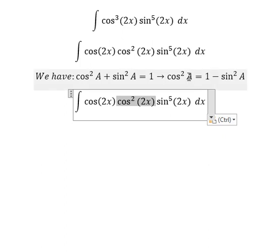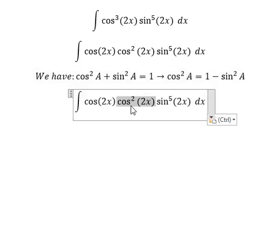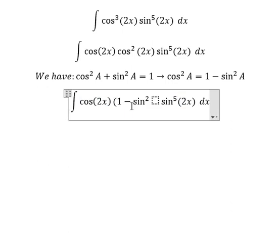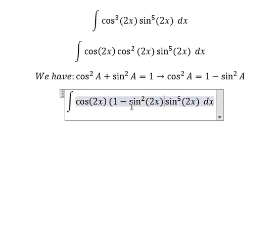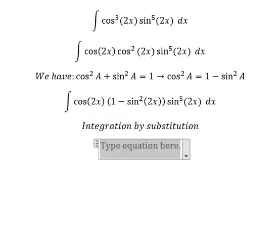So we need to transform into cosine 2x times 1 minus sine squared 2x times sine squared 2x dx. Next we can use integration by substitution. I will let u equal sine 2x.